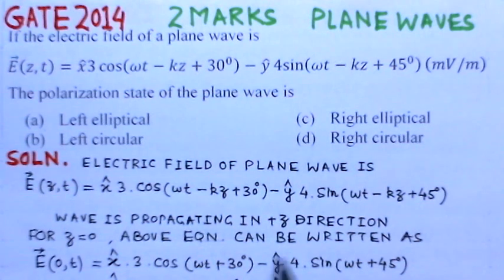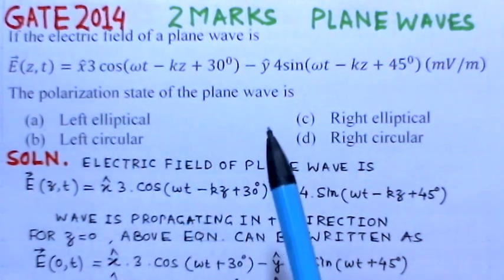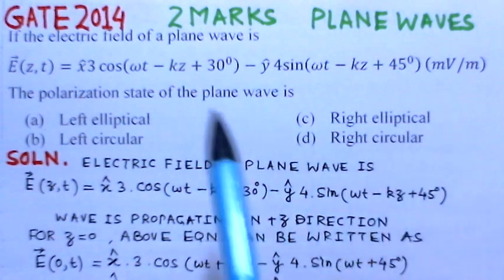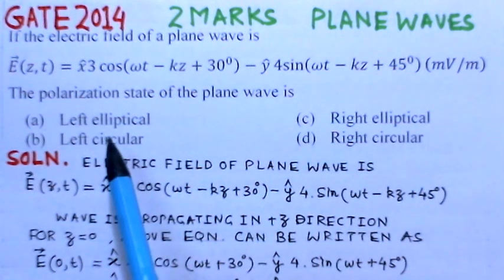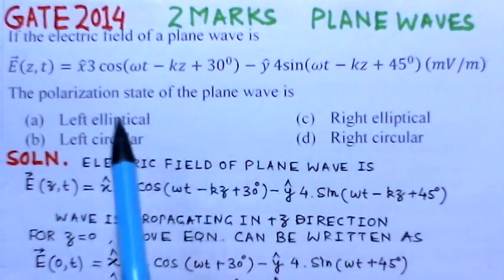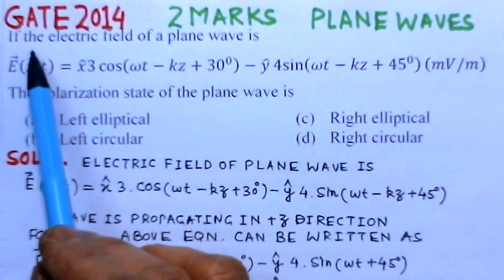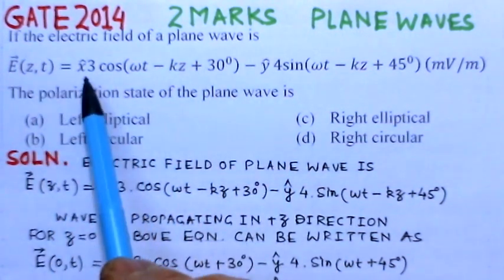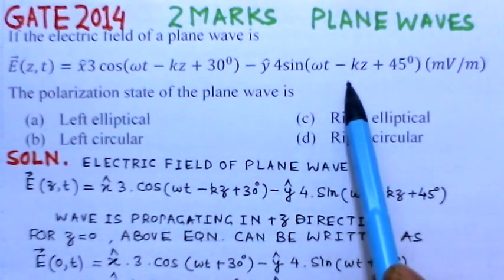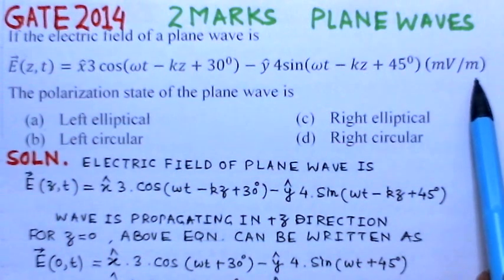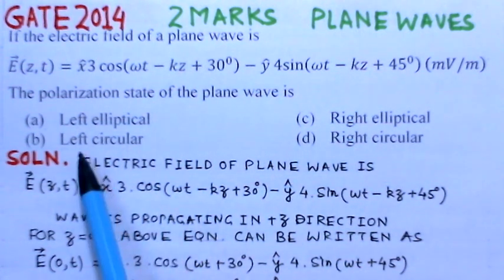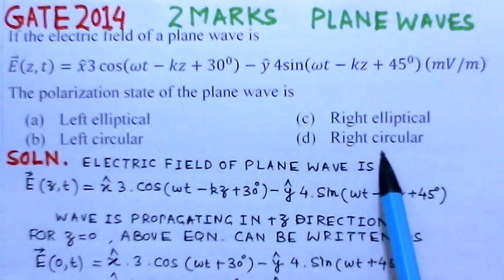This problem is from GATE 2014, worth two marks, on plane waves. It is the second problem in the area of polarization of waves — how to determine the polarization of a wave. The electric field of a plane wave is given as E(z,t) = x̂ · 3cos(ωt − kz + 30°) − ŷ · 4sin(ωt − kz + 45°) millivolts per meter. The polarization state is: A) left elliptical, B) left circular, C) right elliptical, or D) right circular.